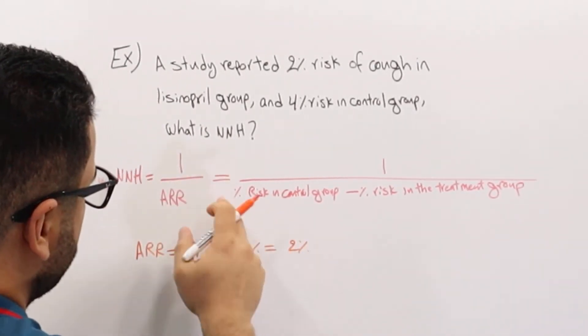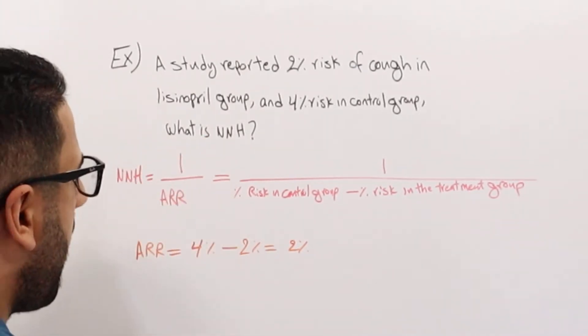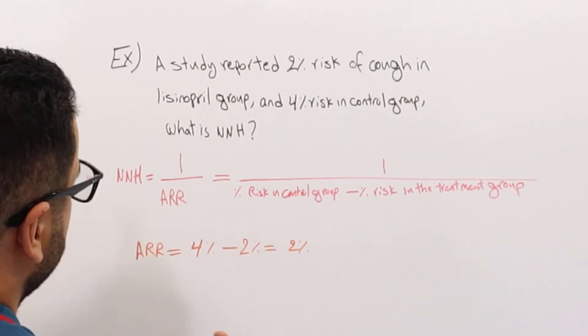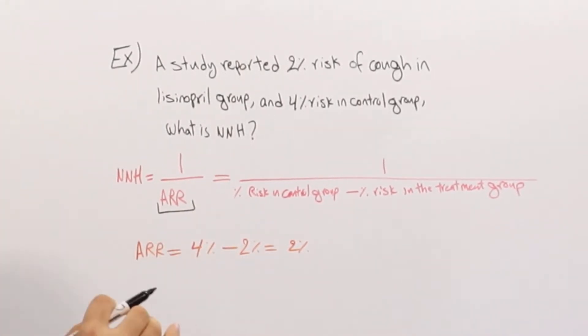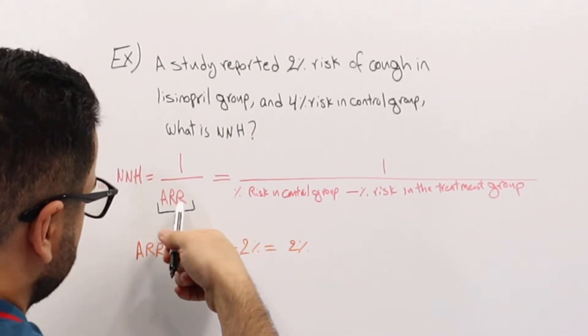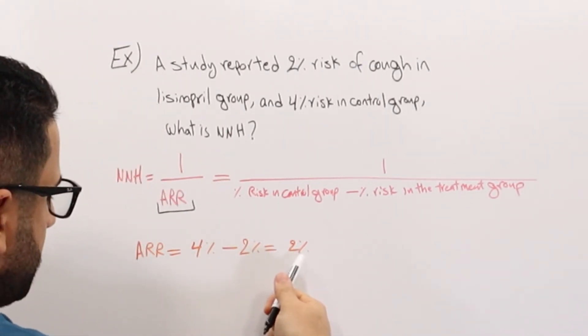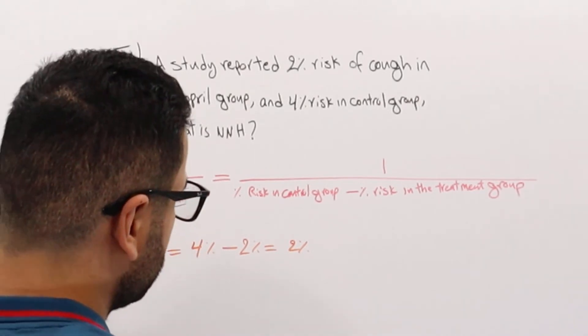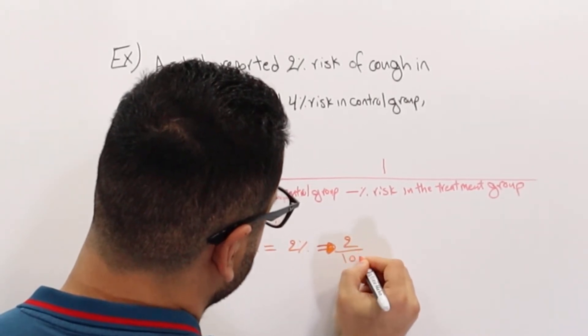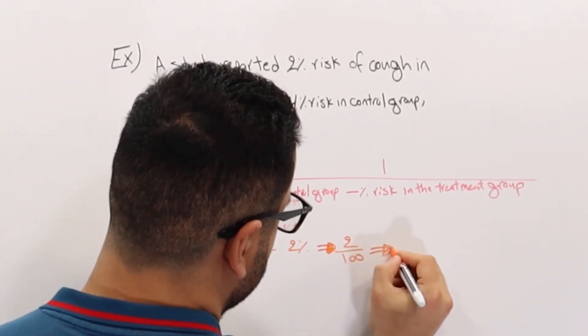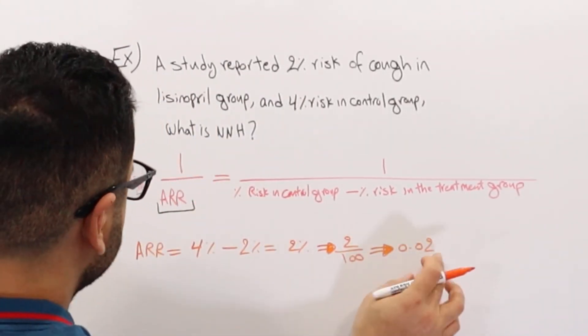Now, do I jump in right away and plug in the 2% over here so we can get number needed to harm? No. The reason why is because whenever I have number needed to treat or number needed to harm, this value must be in decimal places. If I place 2% over here, 1 over 2%, that's not going to give me the correct answer. I need to change this into decimal places. So 2% is the same as 2 over 100, which is the same as 0.02.